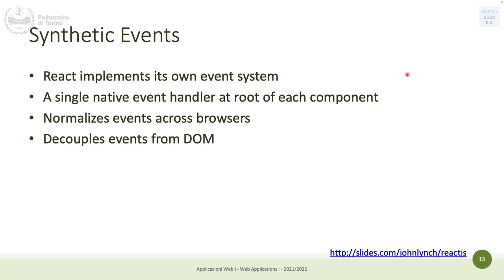On top of the events that exist on the DOM — onload, onclick, etc. — React implements its own event system, more optimized than the traditional event system. It exposes a single native event handler for each component, and normalizes events across browsers. This adds a layer so that events in React are decoupled from events in the DOM. At a certain point React will interact with the DOM — not always, but when it's appropriate, according to the logic of your components.